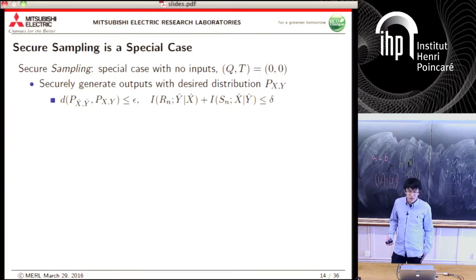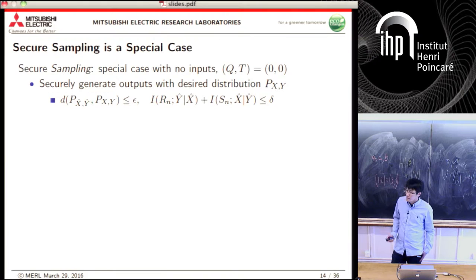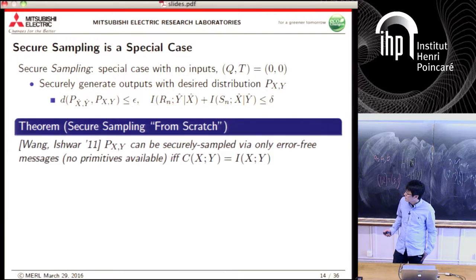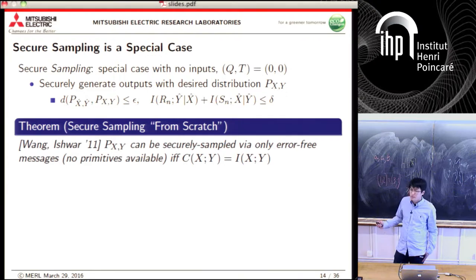Secure sampling is a special case of the computation problem where there are no inputs to the functionality — you want to securely generate outputs with some desired distribution. The security conditions simplify in this case, and it's a useful setting for proving completeness results as well. A distribution can be securely sampled from scratch using just error-free messages if and only if the distribution has common info equal to mutual information.